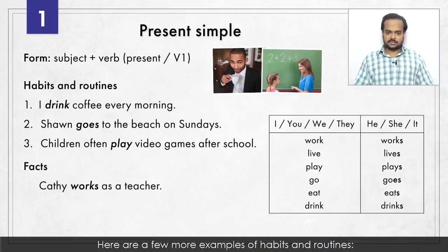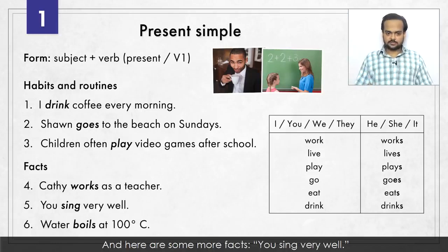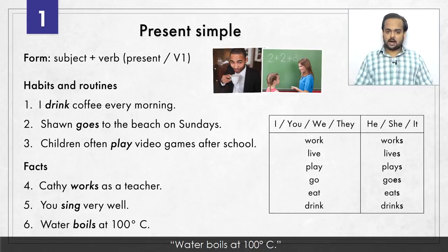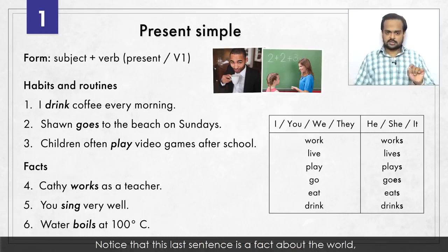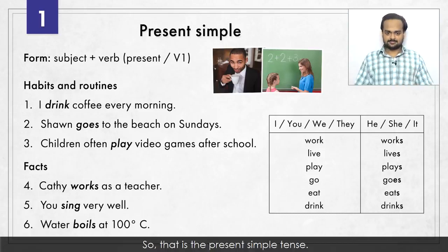Here are a few more examples of habits and routines: Sean goes to the beach on Sundays. Children often play video games after school. And here are some facts: You sing very well – said as a fact about someone's ability. Water boils at 100 degrees Celsius. Notice that this last sentence is a fact about the world. So facts can be about people, or they can be about things in the world. So that is the present simple tense.